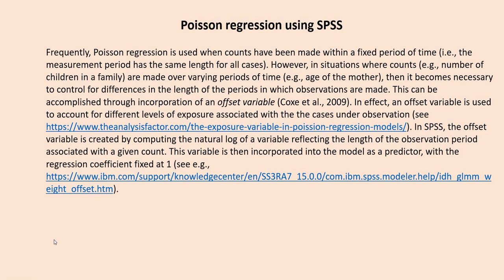Frequently, Poisson regression is used when counts have been made within a fixed period of time — the measurement period has the same length for all cases. However, in situations where counts are made over varying periods of time, it becomes necessary to control for differences in the length of the periods in which observations are made. This can be accomplished through the use of an offset variable, which accounts for different levels of exposure associated with the cases under observation. In SPSS, the offset variable is created by computing the natural log of a variable reflecting the length of the observation period, then incorporated into the model as a predictor with the regression coefficient fixed at 1. In this video, we are not going to be using offset variables, but this is something to be aware of.